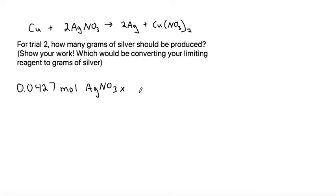In order to convert to grams of silver, the first thing to do is to convert from moles of the compound that we currently have to moles of silver. The way we can do that is by putting moles of what we have in the denominator and moles of silver on top.